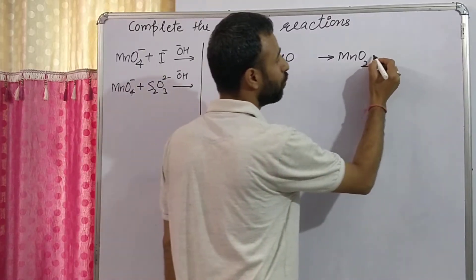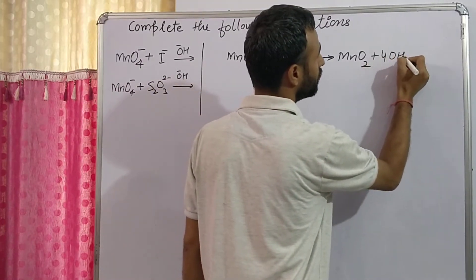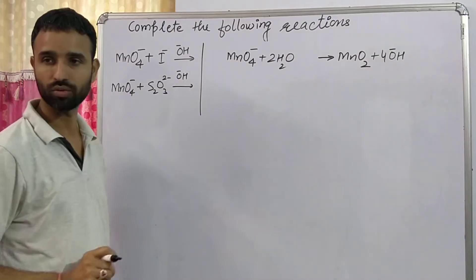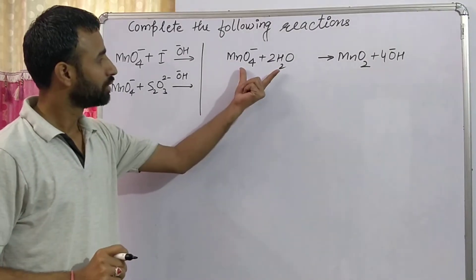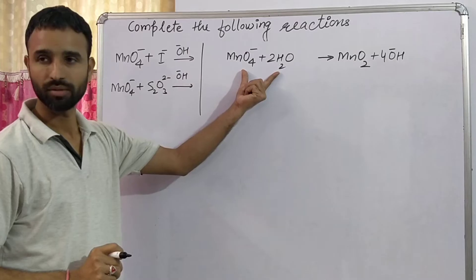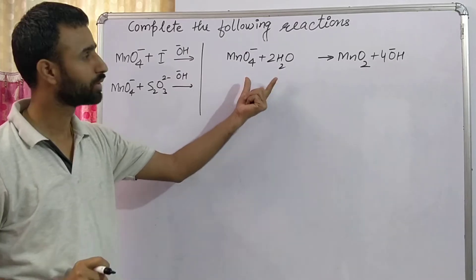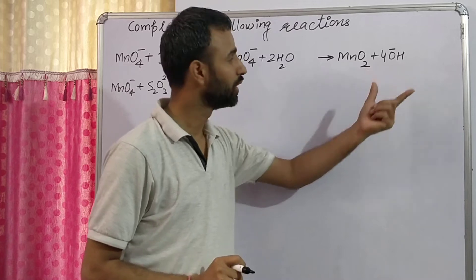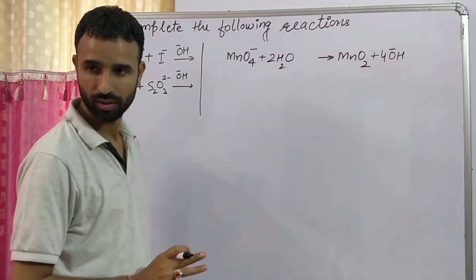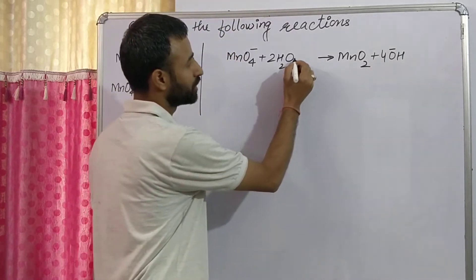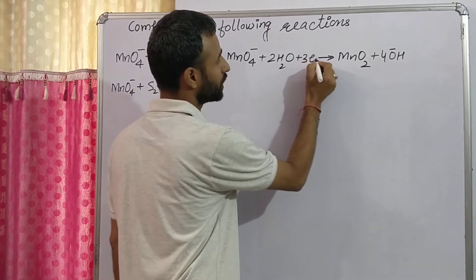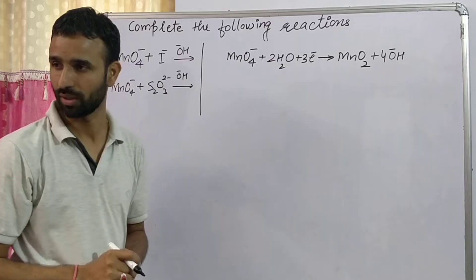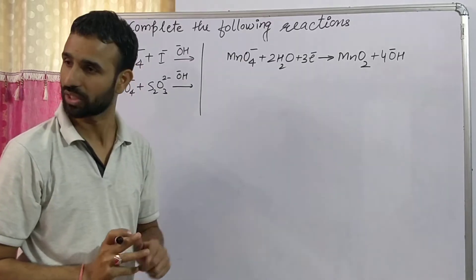And add double the number of OH⁻ ions to the opposite side. On this side charge is minus one, on the other minus four. So we add electrons to the side deficient of negative charge so that the charge is balanced. In this way, charge is balanced in neutral or basic medium.